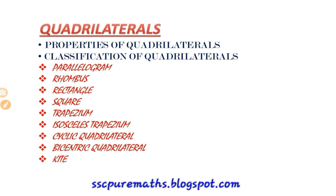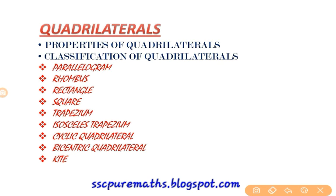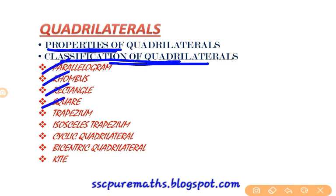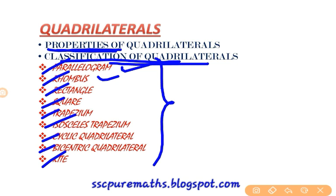Next is quadrilaterals. Certain properties are applicable to any type of quadrilateral, whether rectangle, square, or whatever it may be. Then there is classification of quadrilaterals: specific types like parallelogram, rhombus, rectangle, square, trapezium, isosceles trapezium, cyclic quadrilateral, bicentric quadrilateral, and kite. You must know all the specific properties of each quadrilateral.